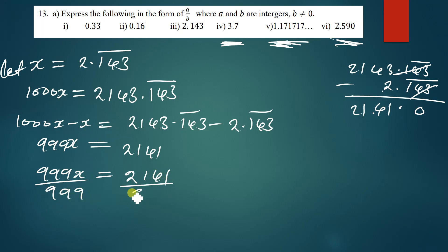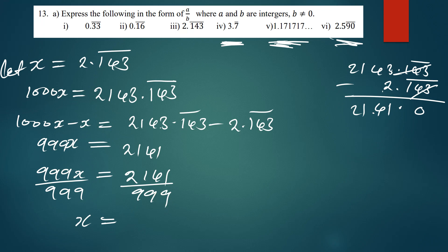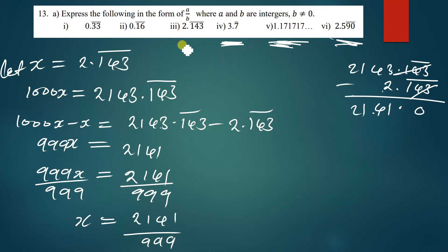Dividing both sides by 999: x = 2141/999. Checking whether this simplifies — since there's no common factor between 2141 and 999 — we leave it as 2141/999. Therefore, 2.143̄ = 2141/999.